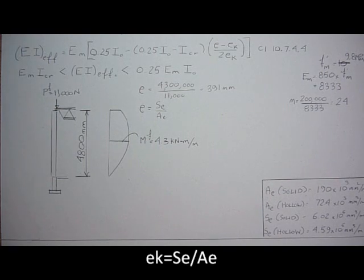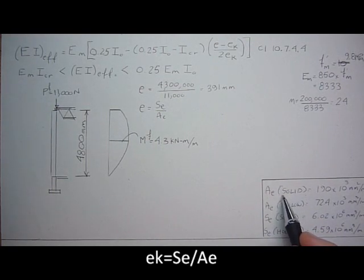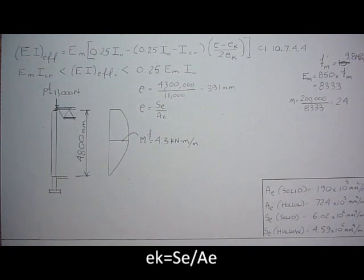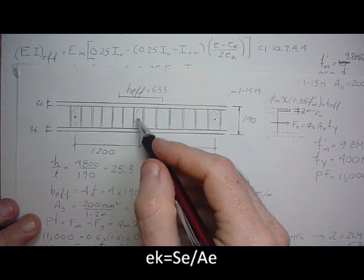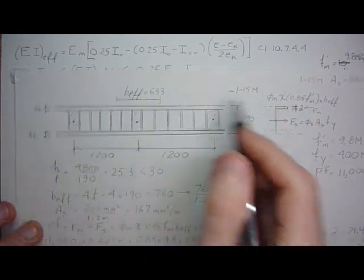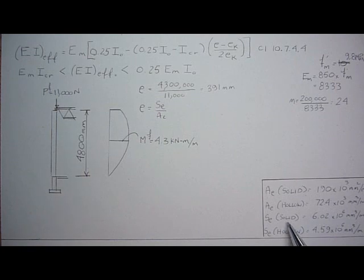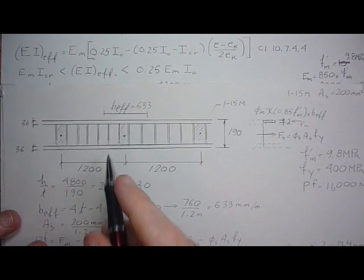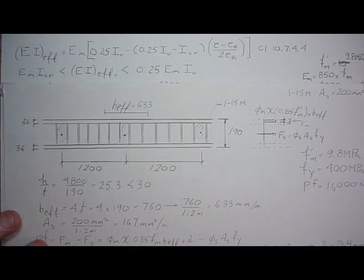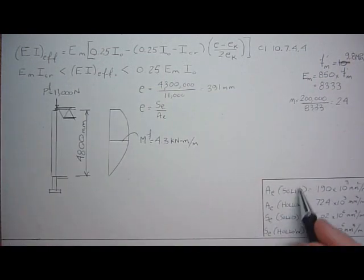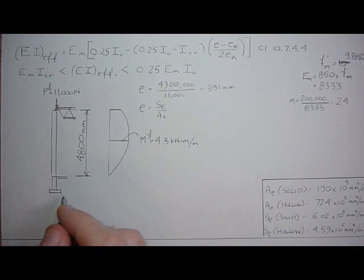I already have from the tables the area solid if it was fully grouted. So if the area was fully grouted for the whole wall, this would be the area. And if it's hollow, no grouting, 72.4. Similarly we have section modulus, solid and hollow. But we have one core grouted every six cores, so we have to average these values out. Let's do that right now.